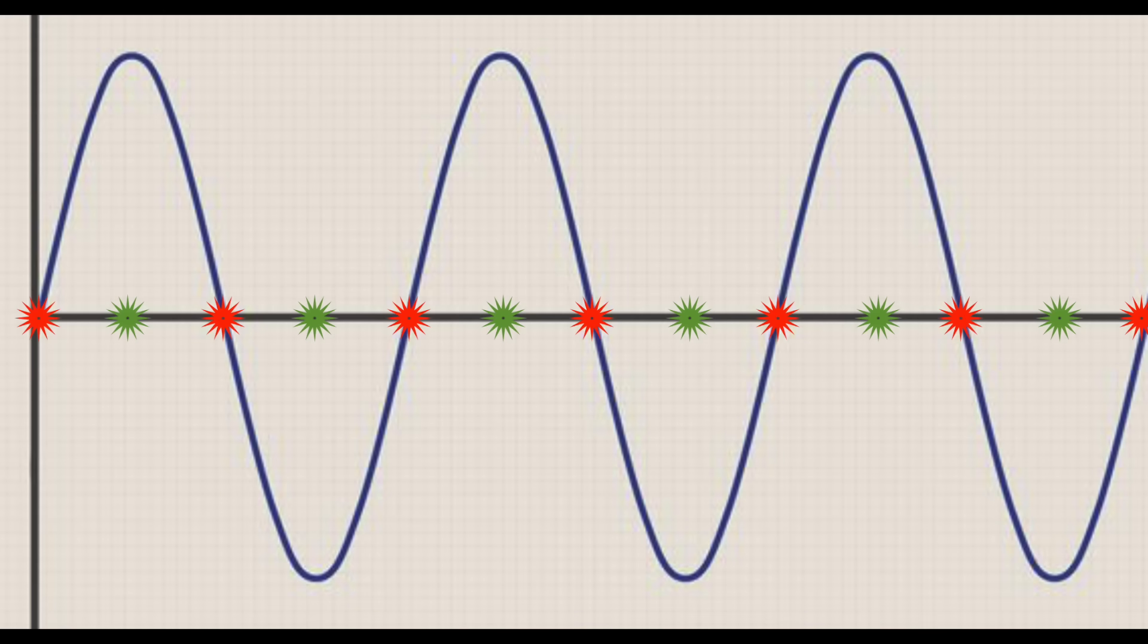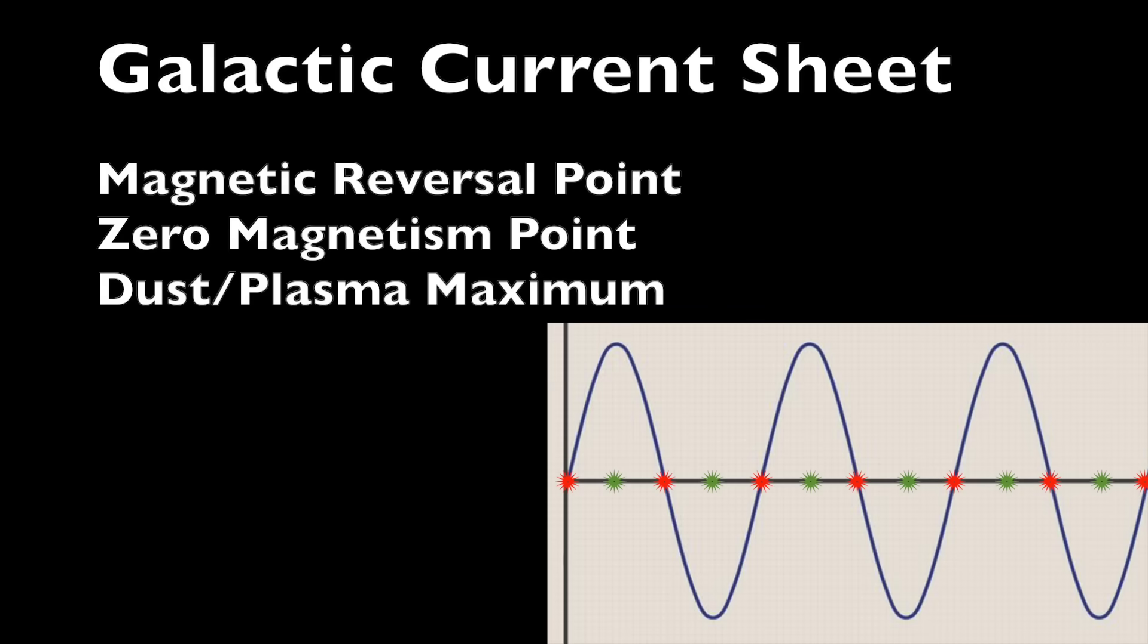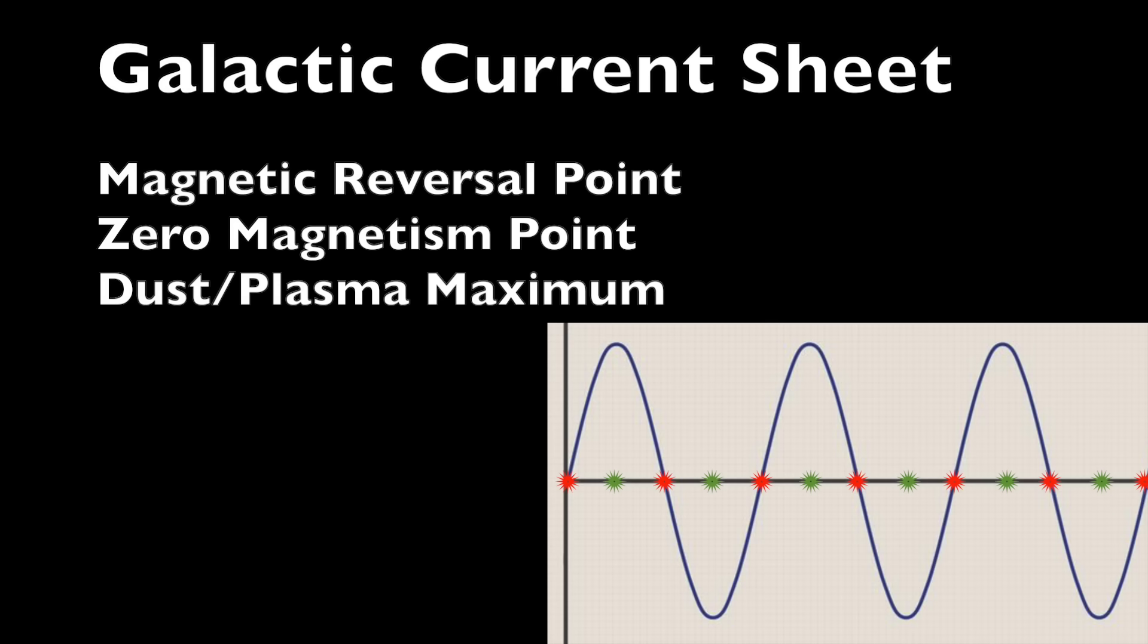But let's think about this. If the sine wave, the galactic current sheet, is the magnetic zero point, when do we endure peak galactic magnetic force? Yep, right in the middle, when we are at the furthest from the sheet, every 6,000 years.